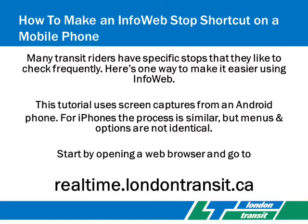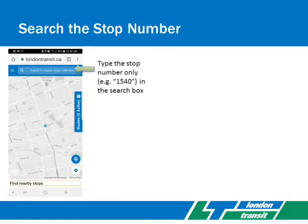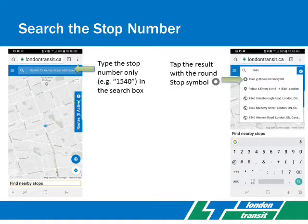Start by opening a web browser and go to realtime.londontransit.ca. First, search the stop number. Type the stop number only — for example, 1540 — in the search box near the top. Tap the result with the round stop symbol.